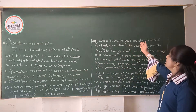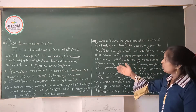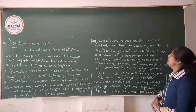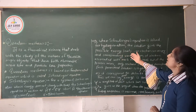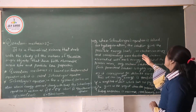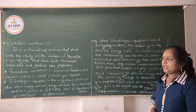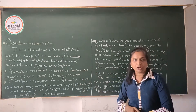When this Schrödinger equation is solved for a hydrogen atom, the solution gives the possible energy levels that an electron can occupy, and the corresponding wave functions of the electrons are associated with each energy level.